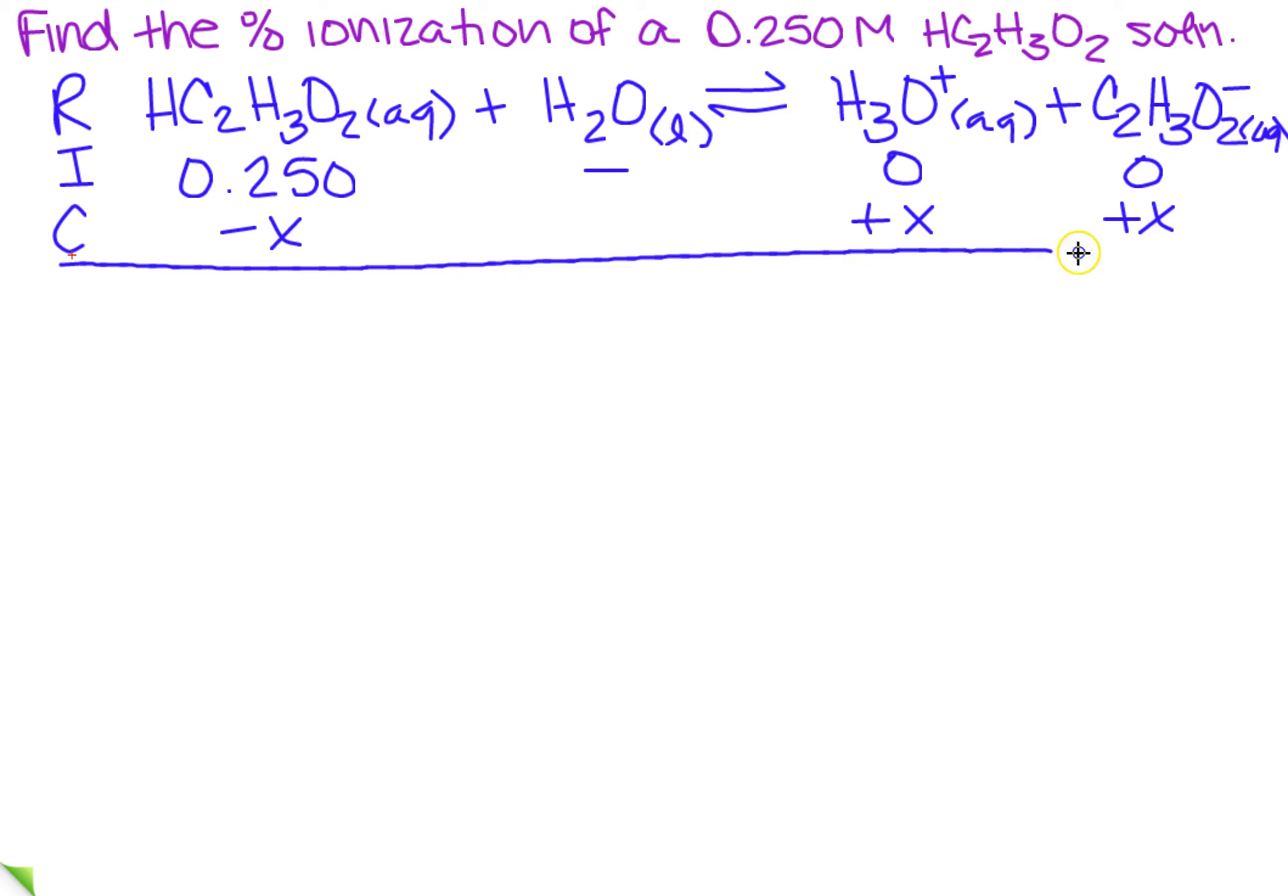I need to find it at equilibrium. So remember, I'm going to add straight down. So this becomes 0.250 minus x, and just x and x.